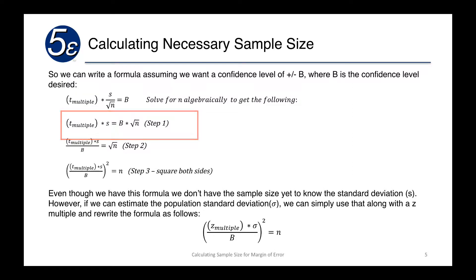Further, divide both sides by b and we end up with the square root of n is equal to the t multiple times sample standard deviation all over b. We can remove the square root by squaring both sides and we end up with the following. n equals the t multiple times sample standard deviation over b and take that whole quantity squared.